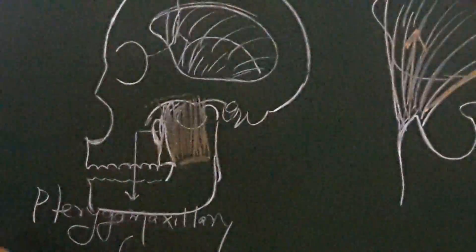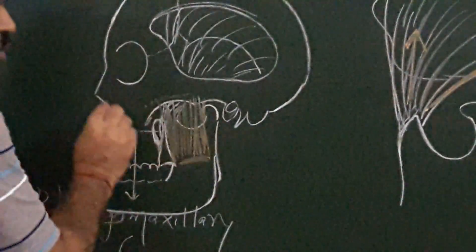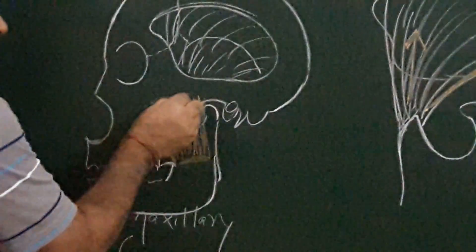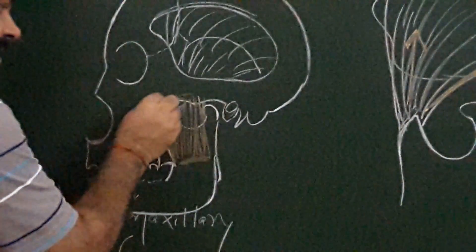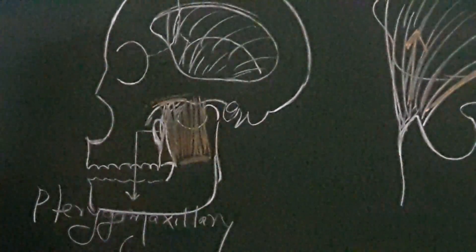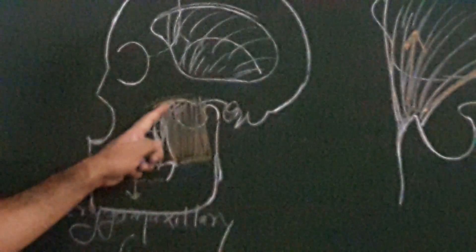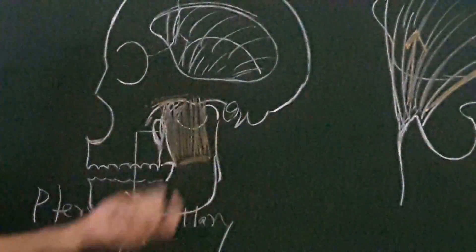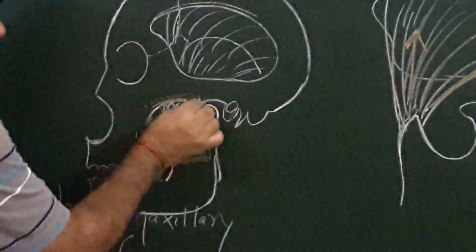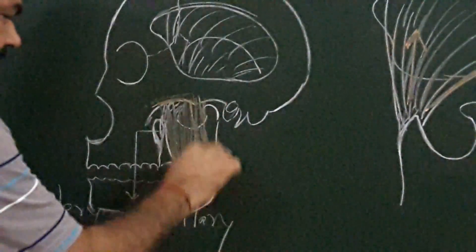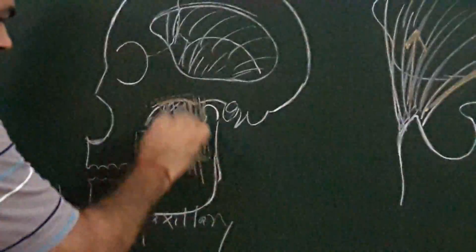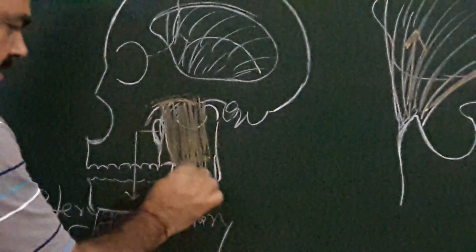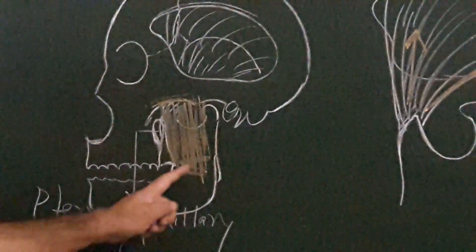The middle layer: the anterior two-thirds of fibers arise from the deep surface of the zygomatic arch, and the posterior fibers arise from the lower border of the zygomatic arch. These fibers are vertically arranged and cover the ramus and are inserted on the ramus.